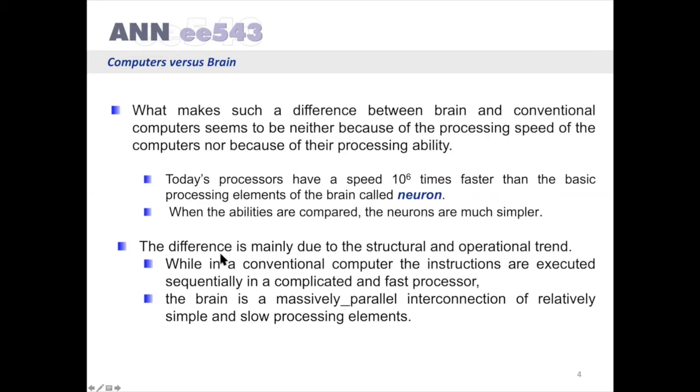The difference is mainly due to the structural and operational trend. While in a conventional computer, the instructions are executed sequentially in a complicated and fast processor, the brain is a massively parallel interconnection of relatively simple and slow processing elements.